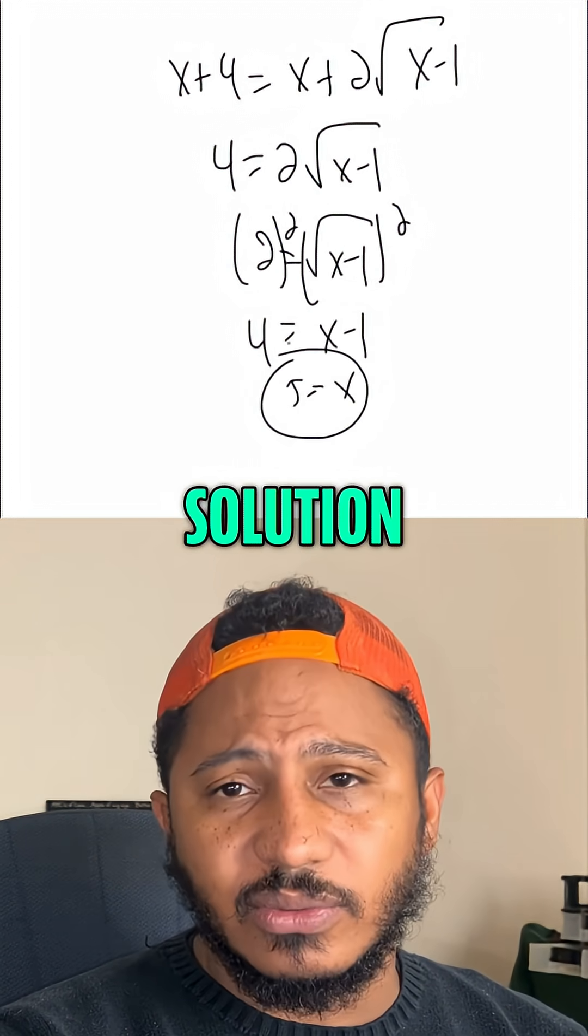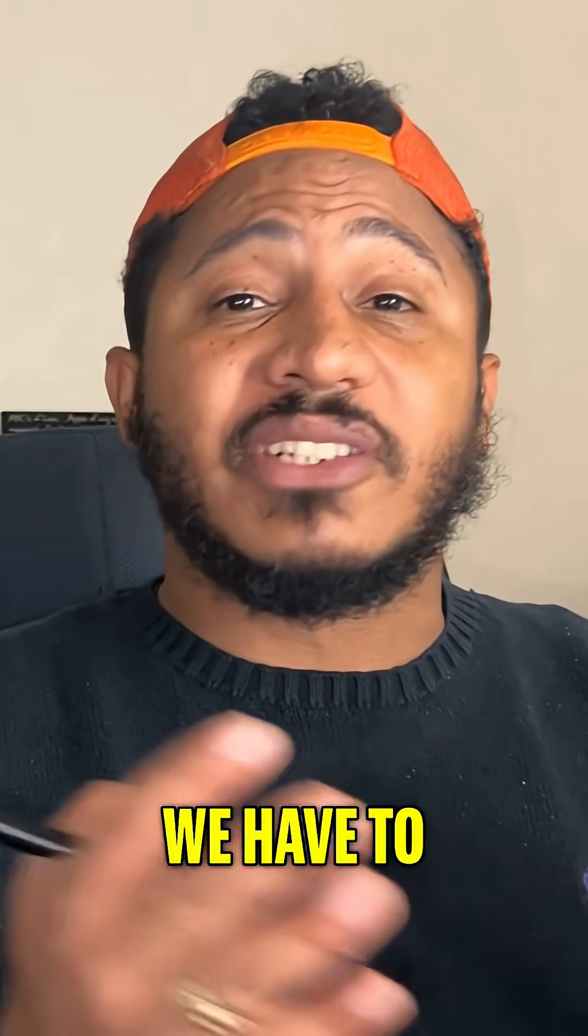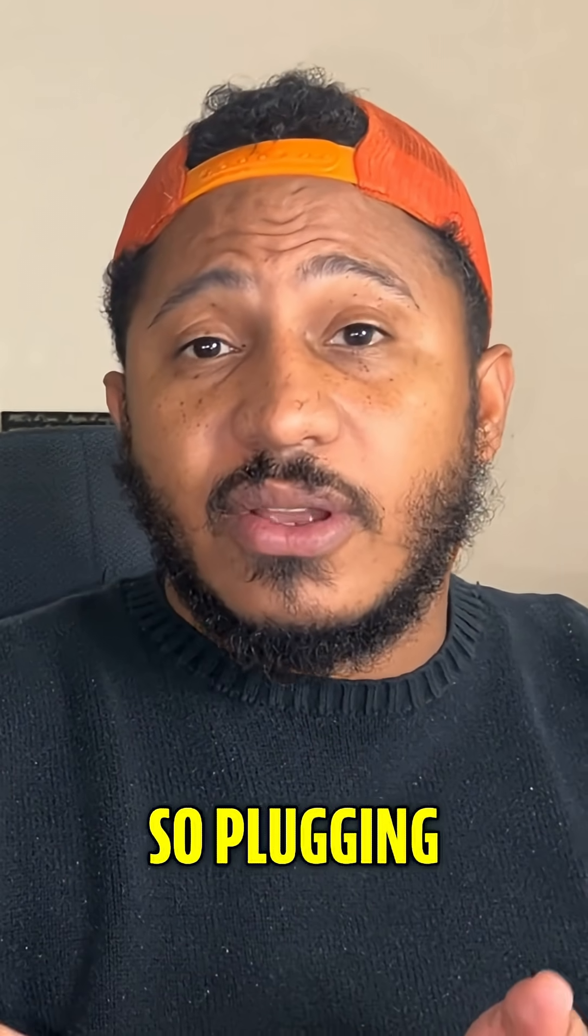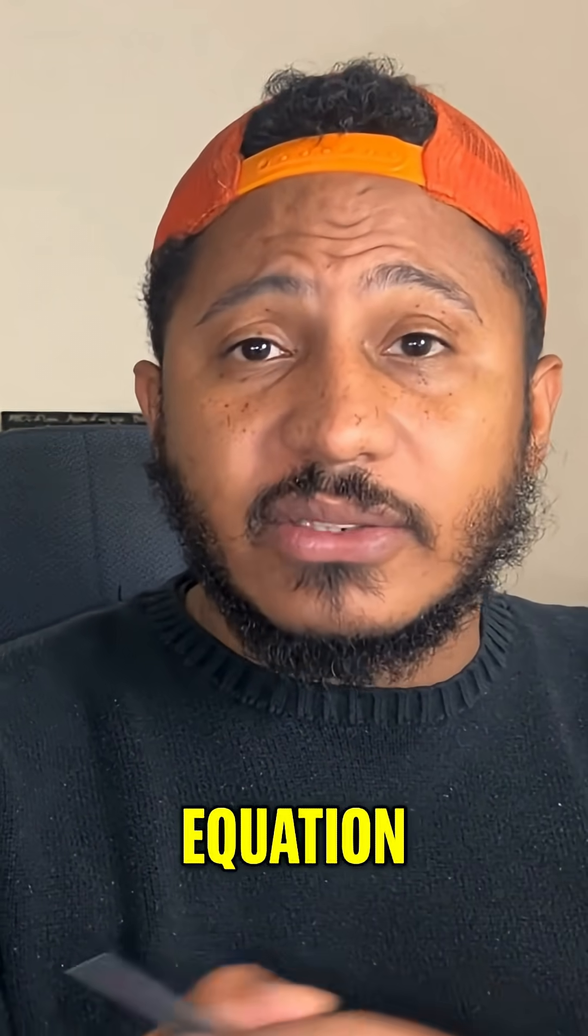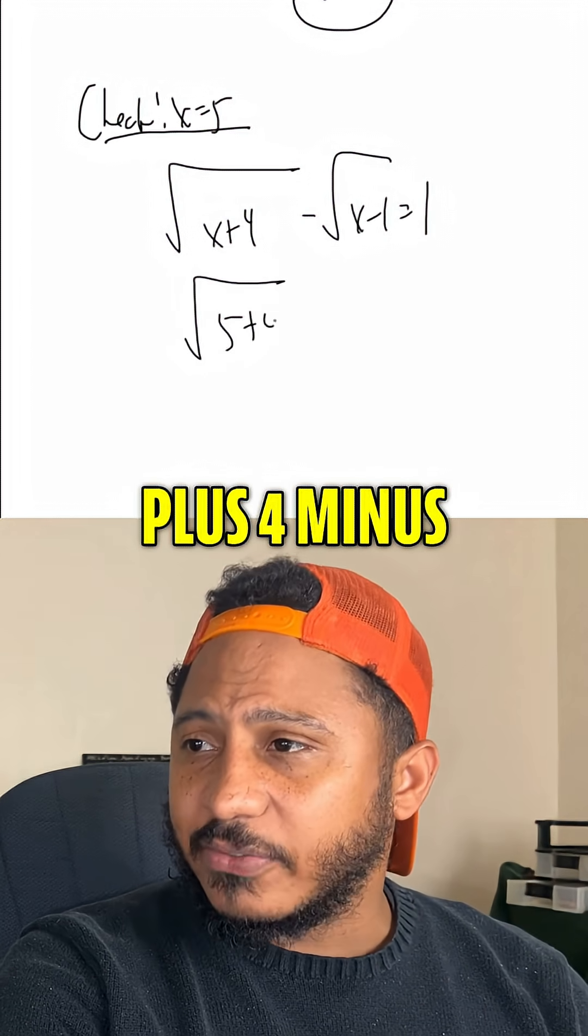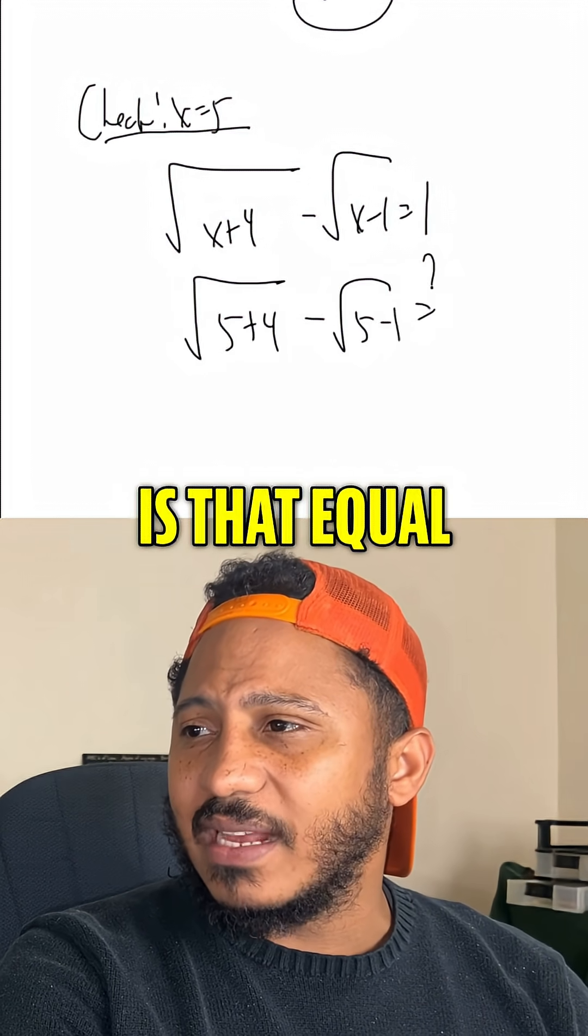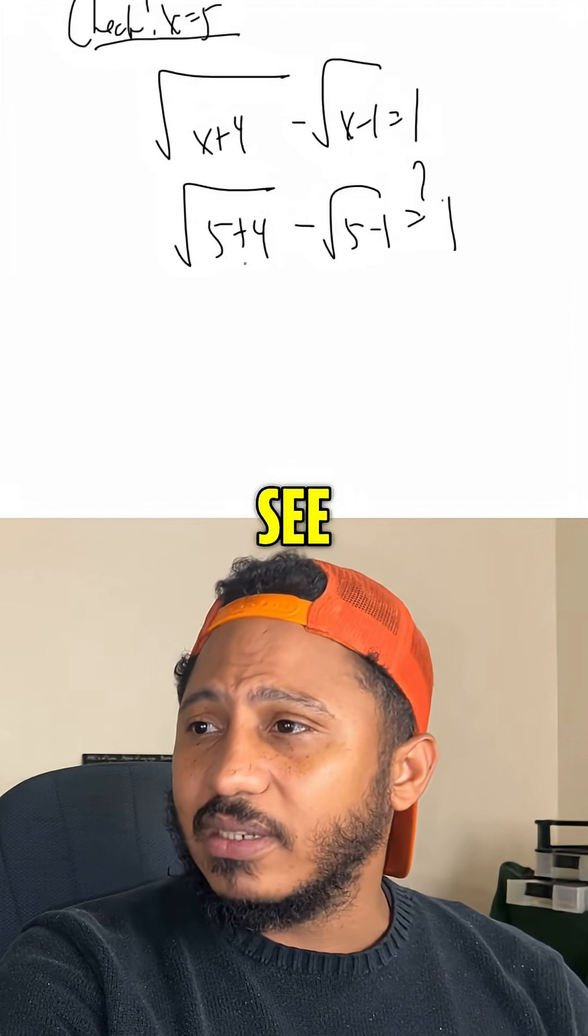However, since it's a radical equation, we have to check, because sometimes an extraneous solution is going to occur. So, plugging it back into the original equation, we get the square root of 5 plus 4 minus the square root of 5 minus 1. Is that equal to 1? Is this true? Well, let's see.